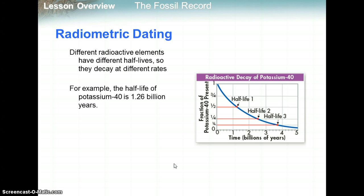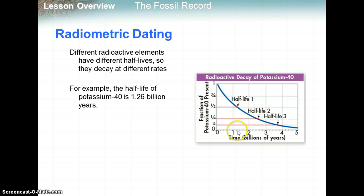Different radioactive elements have different half-lives. Looking at potassium-40, which is a type of radioactive isotope, you start out with 100% at zero time. Every 1.26 billion years — so this is a very long half-life — potassium-40 will decay by half. After another 1.26 billion years, you have a quarter of what was left, which would be half of a half. You have this asymptote that never reaches zero — an exponential decay pattern with a radioactive dating half-life graph.